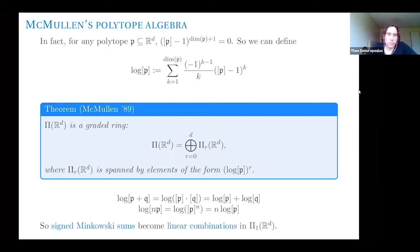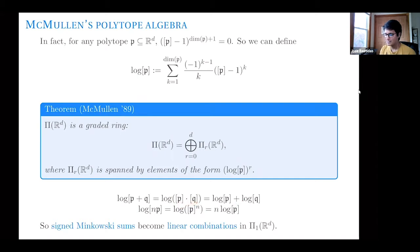In degree one, things are very nice because the usual properties of logarithm still hold. For example, the logarithm of the product is the sum of the logarithms. Remembering that the product of classes of polytopes is just the Minkowski sum, what's happening is that signed Minkowski sums — Minkowski sums with coefficients — become linear combinations in this space. Linear combinations may be easier to deal with than signed Minkowski sums, and that's going to be relevant at the end.